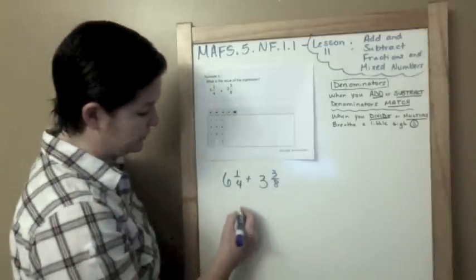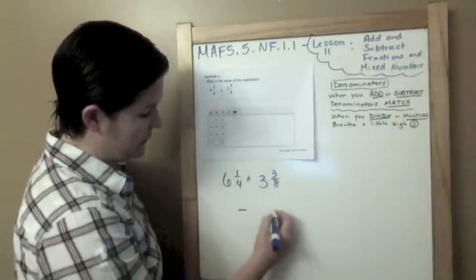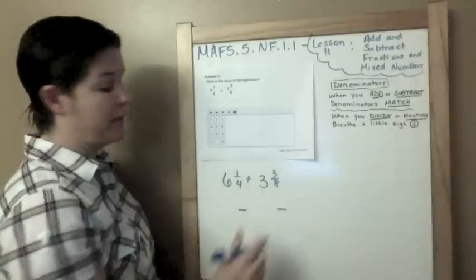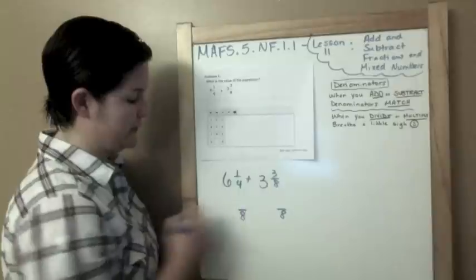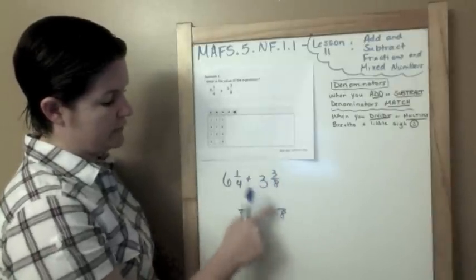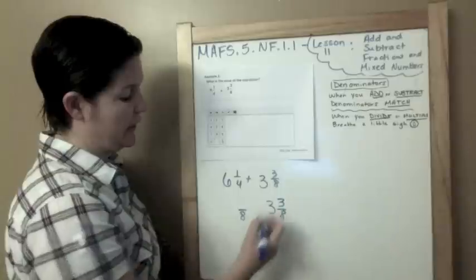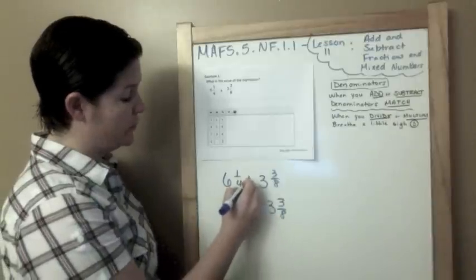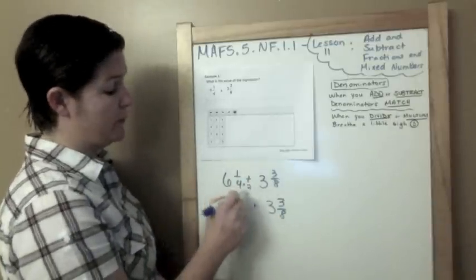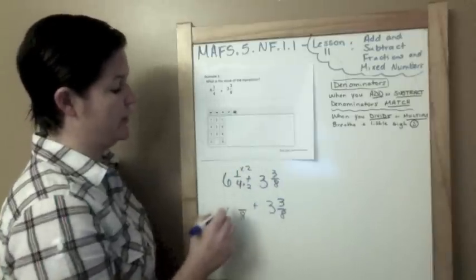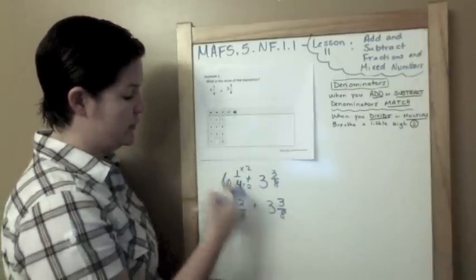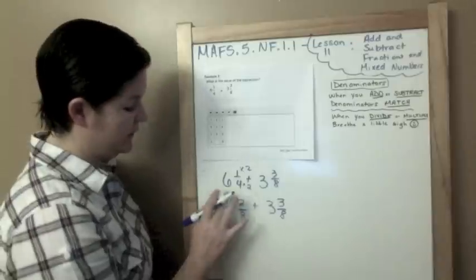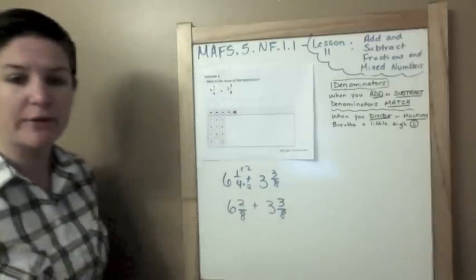So here's what I do. I'm going to get my fractions going first. So I know that four and eight, a common denominator that they have would be eight and eight. Did I do anything to get to this eight? No. So I'm going to keep my three and three eighths, bring all that down. Now to get from four to eight, I had to multiply by two. When I multiplied the denominator by two, I also need to multiply my numerator. So one times two is two. So six and one fourth is equivalent or equal to six and two eighths.